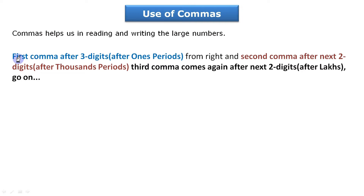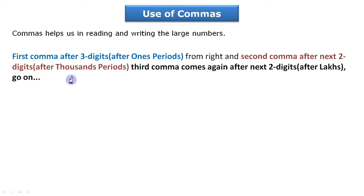We put the first comma after three digits from the right side. Count three digits from the right side and then put the first comma. The second comma comes after the next two digits, that is after the thousands period.